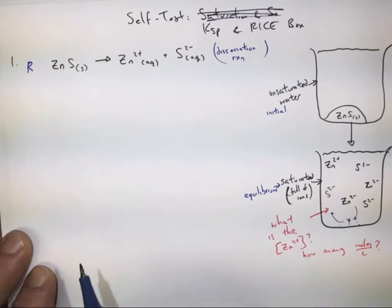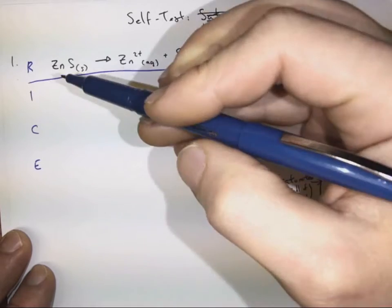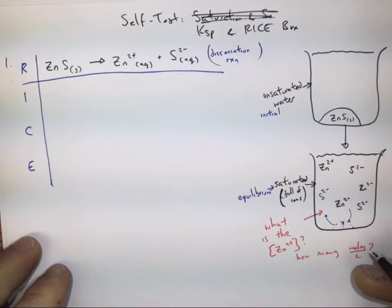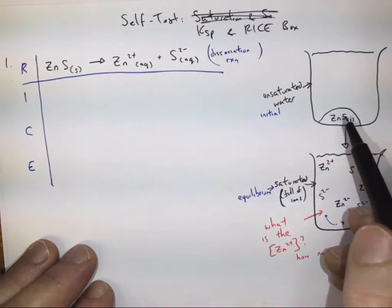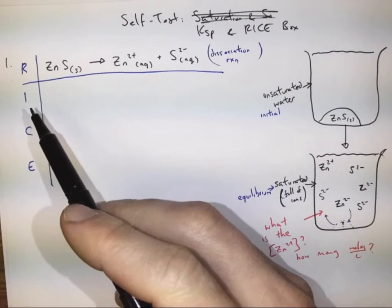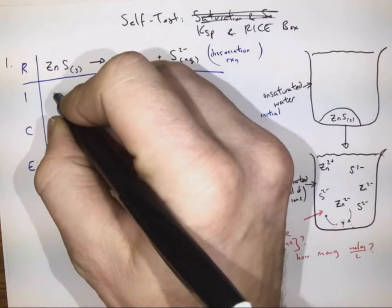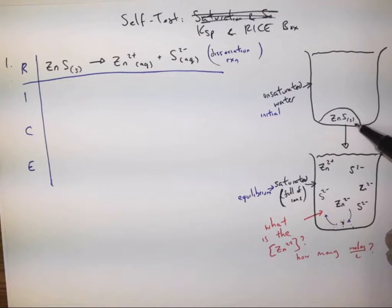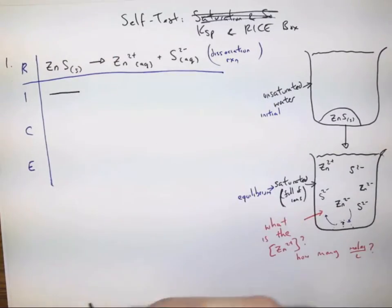I'm going to write R here and let this be my first step in my rice box. We're going to write the concentrations of zinc sulfide, zinc ions, and sulfide ions in the initial condition. Solids don't have a concentration — there's no number of moles per liter. We don't express solids or pure liquids in terms of concentration, so we just ignore and cross out our zinc sulfide. Solids don't have any place in a rice box.